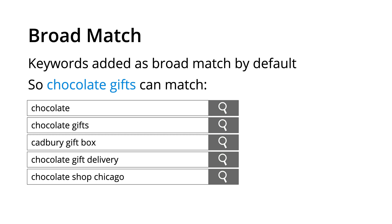When we add keywords, they're added as broad match by default. This match type provides the greatest coverage or reach for the keywords you are bidding on. It's going to broadly match the keywords to what people are searching for on Google. So if we were bidding on chocolate gifts, our ads could appear as people search for chocolate, chocolate gifts, Cadbury gift box, chocolate gift delivery, and chocolate shop Chicago. All of these search queries broadly relate to the keyword chocolate gifts.